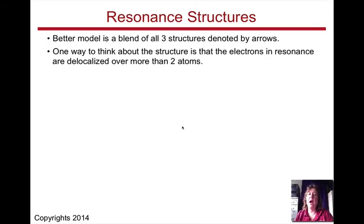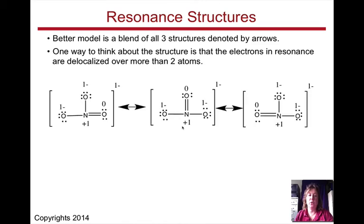The reality is, it's a better model to blend all three structures. And the way we do that is we show our double-headed arrow. So one way to think about this structure is that the electrons are in resonance and are delocalized over more than two atoms.